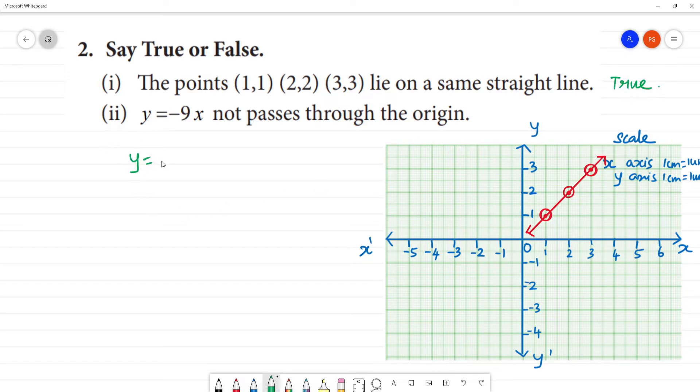Next, the second one. y = -9x does not pass through the origin.